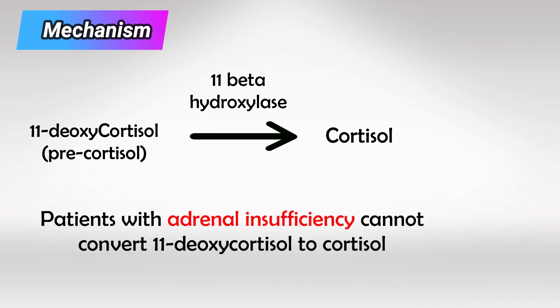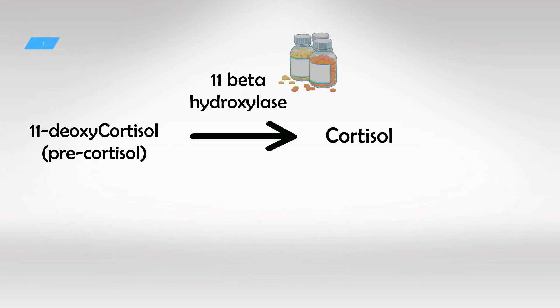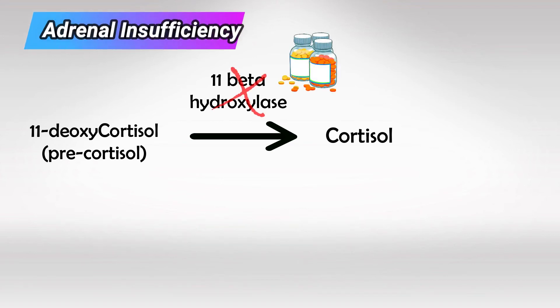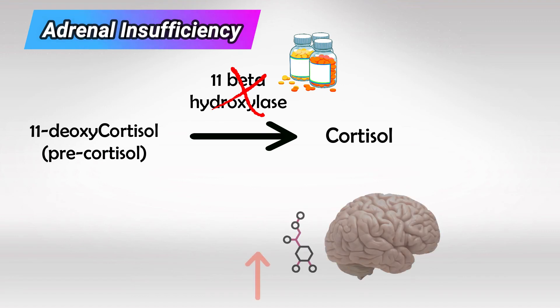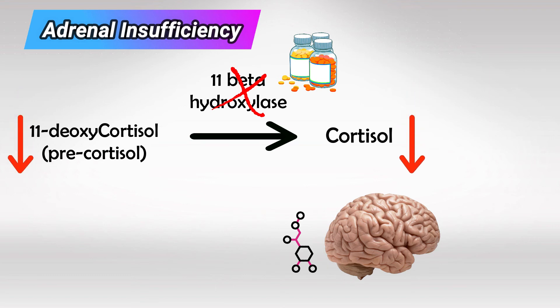Keep in mind that the conversion of 11-deoxycortisol to cortisol occurs in the adrenal glands, and this conversion does not occur in patients with adrenal insufficiency. So, when we use metyrapone in patients with adrenal insufficiency, we'll have increasing levels of ACTH with low 11-deoxycortisol and cortisol.